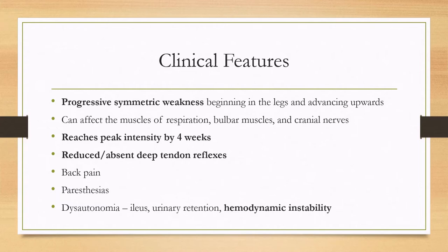Another hallmark of AIDP is reduced or absent deep tendon reflexes. Because this is an inflammation, there can be back pain, and because it affects the nerves, there can be paresthesias. There is also dysautonomia that can happen fairly commonly and can be a cause of death. Symptoms of dysautonomia include hemodynamic instability, ileus, and urinary retention.